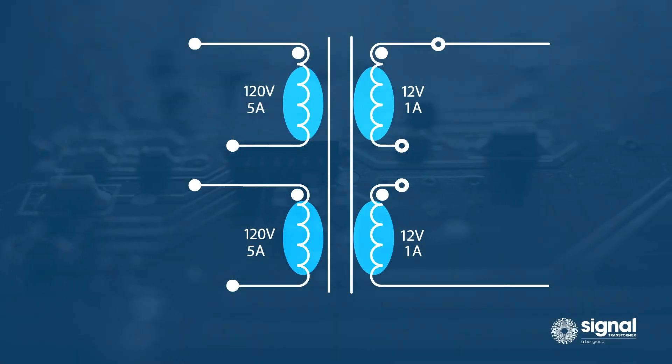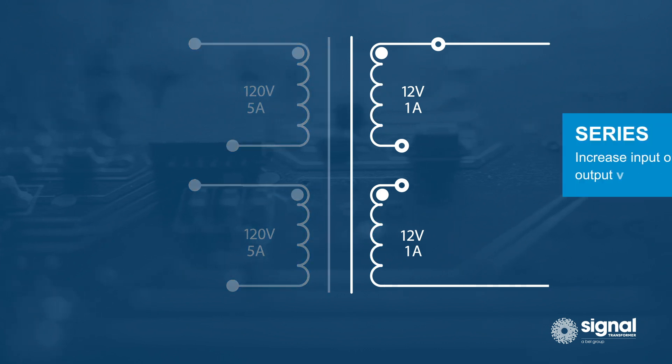Transformers with multiple input and output windings provide the versatility to increase the voltage or current of the input and output by connecting these windings in series or parallel. Multiple windings can be connected in series to increase the input or output voltage.